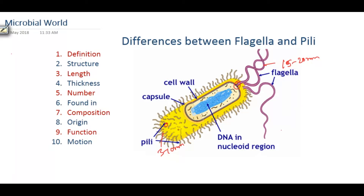In what type of bacteria can we see these two structures? In terms of flagella, we can see it in both gram-positive and gram-negative bacteria. But for pili, only gram-negative bacteria show this kind of structure.